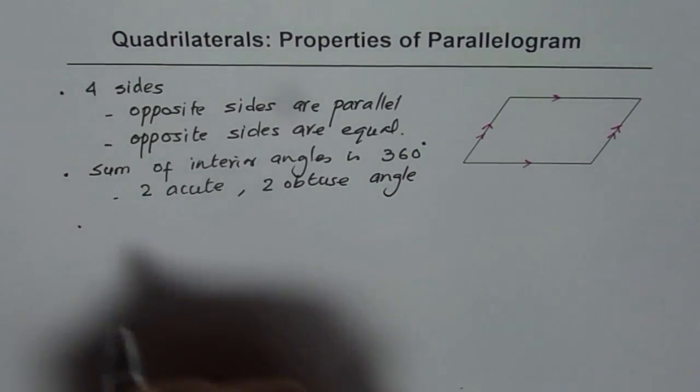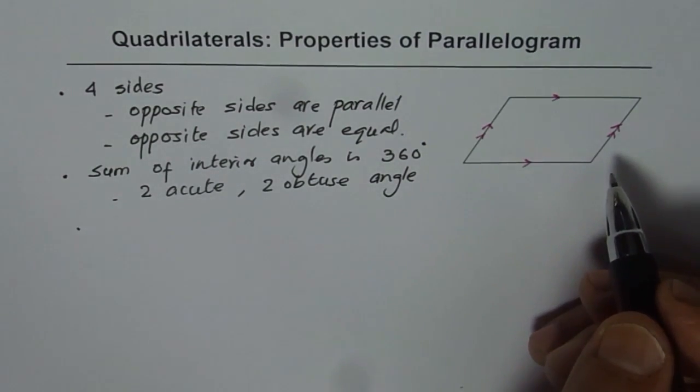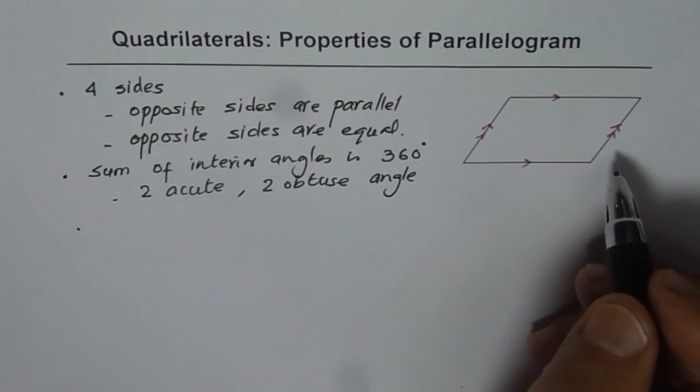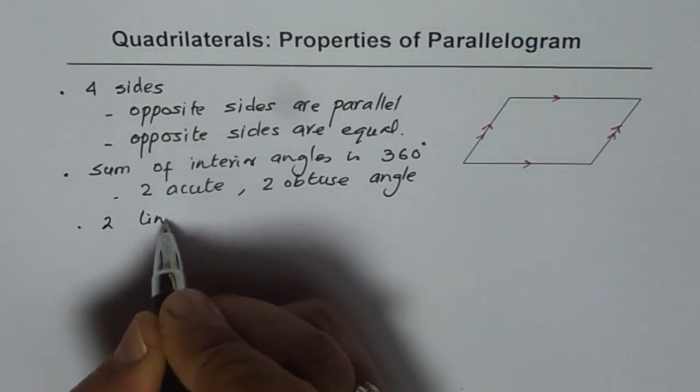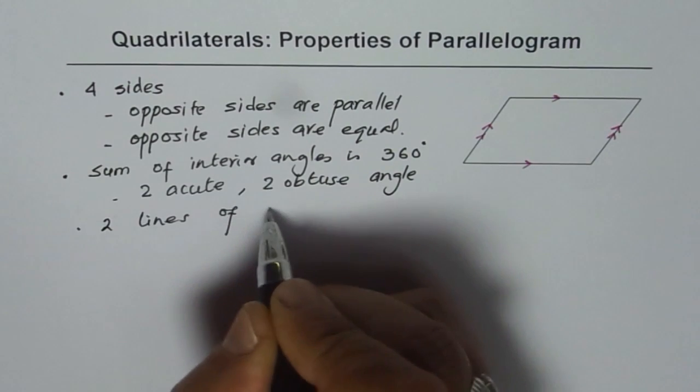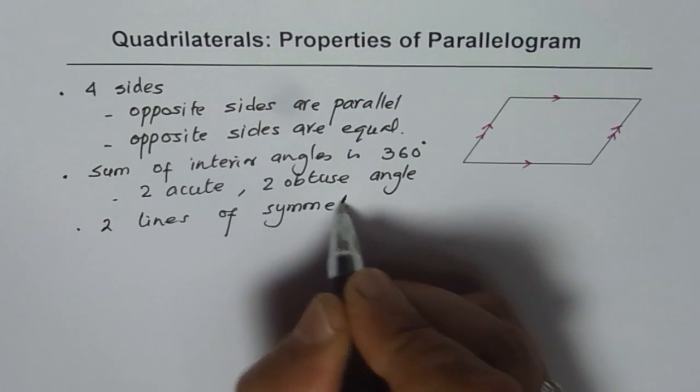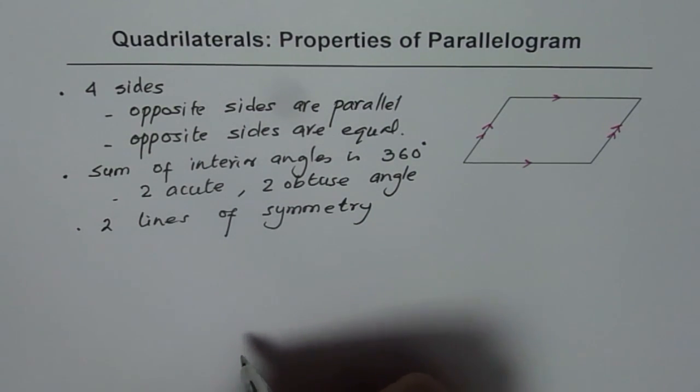Now let us talk about lines of symmetry. How many lines of symmetry do you think a parallelogram has? I will leave that for you. Draw lines of symmetry and figure it out. So there are two lines of symmetry. See, your exercise to draw them and find which are these two lines of symmetry. Now we will talk about rotational symmetry.